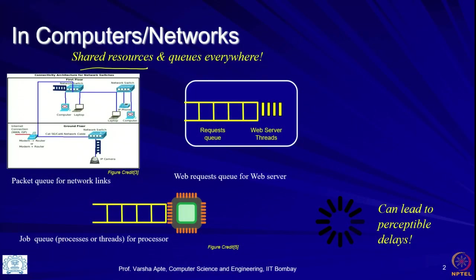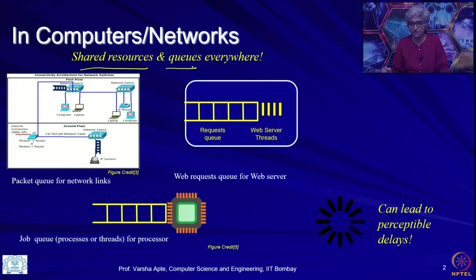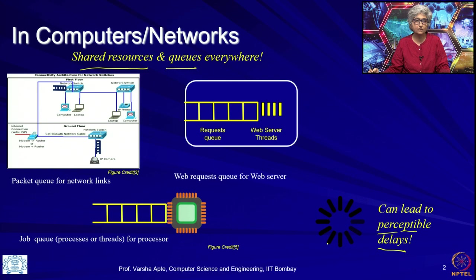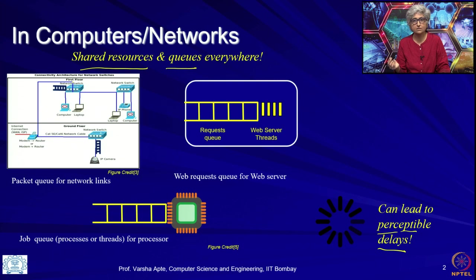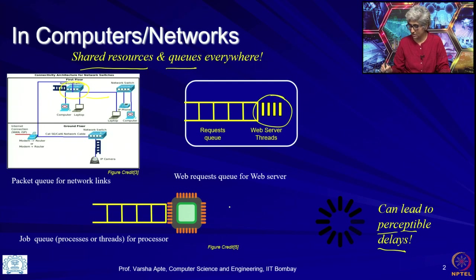In the previous lecture, we had done a lot of discussion about shared resources and queues. We had discussed that delays are basically a result of contention for shared resources. And we had discussed that resources in computers and networks include things like network links, web server threads, and CPU.